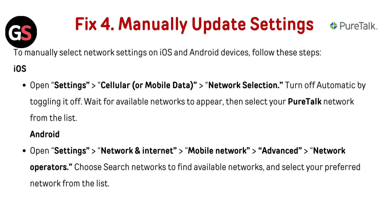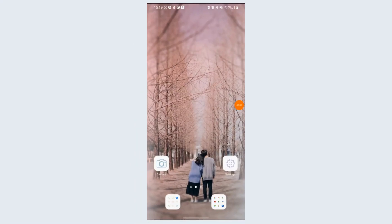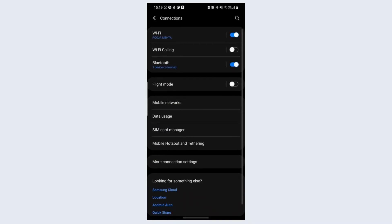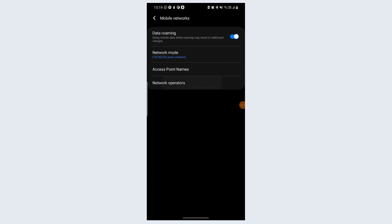Fix 4: manually update settings. To manually select network settings on iOS and Android devices, follow these steps. For iOS, open Settings, go to Cellular or Mobile Data, then go to Network Selection, and turn off Automatic by toggling it off. Wait for available networks to appear, then select your network from the list. For Android, open Settings, then go to Network and Internet, then Mobile Network, then Advanced. Select Network Operator and choose Search Networks to find available networks, then select your preferred network from the list.